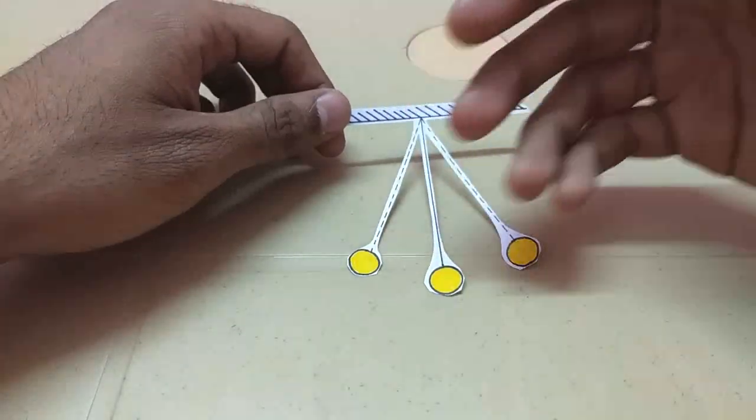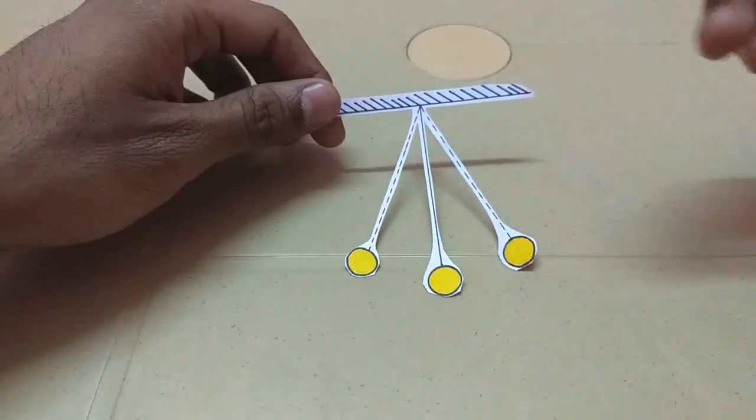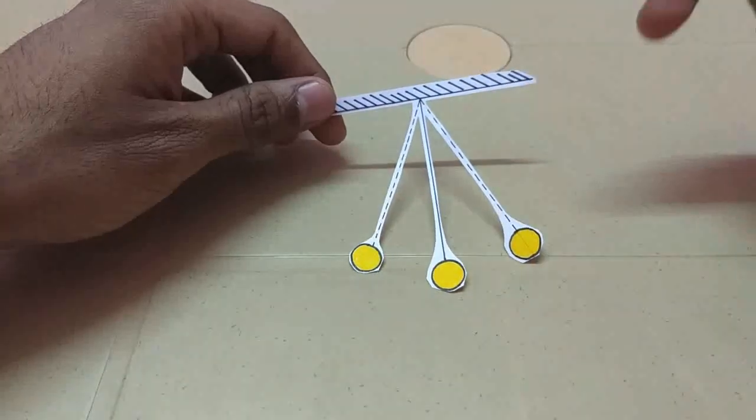Best example would be a swing. When you push a swing, you need to continuously keep pushing the swing so that it keeps swinging back and forth.